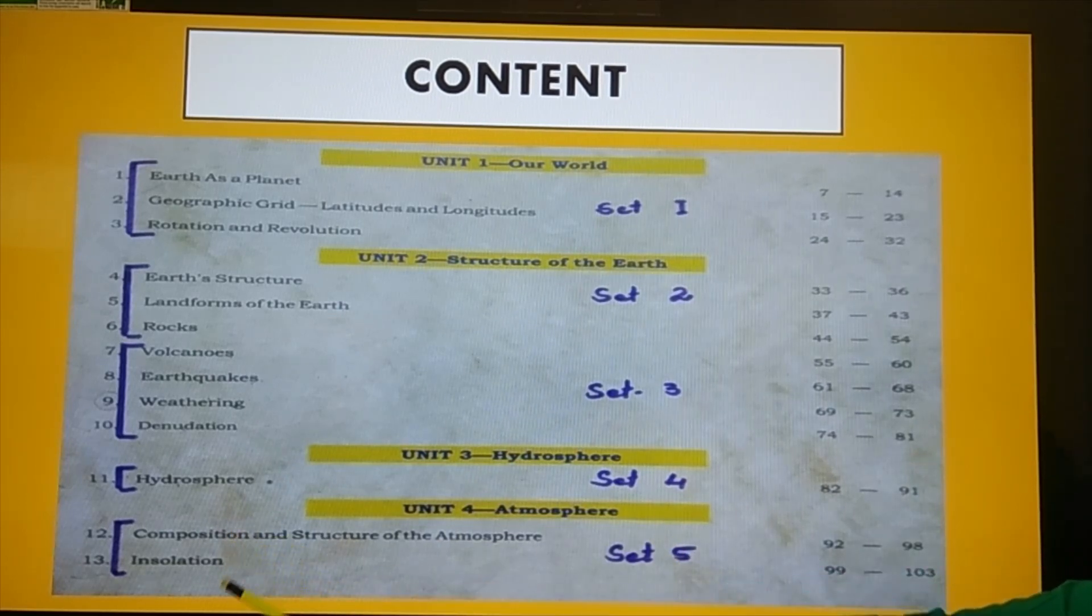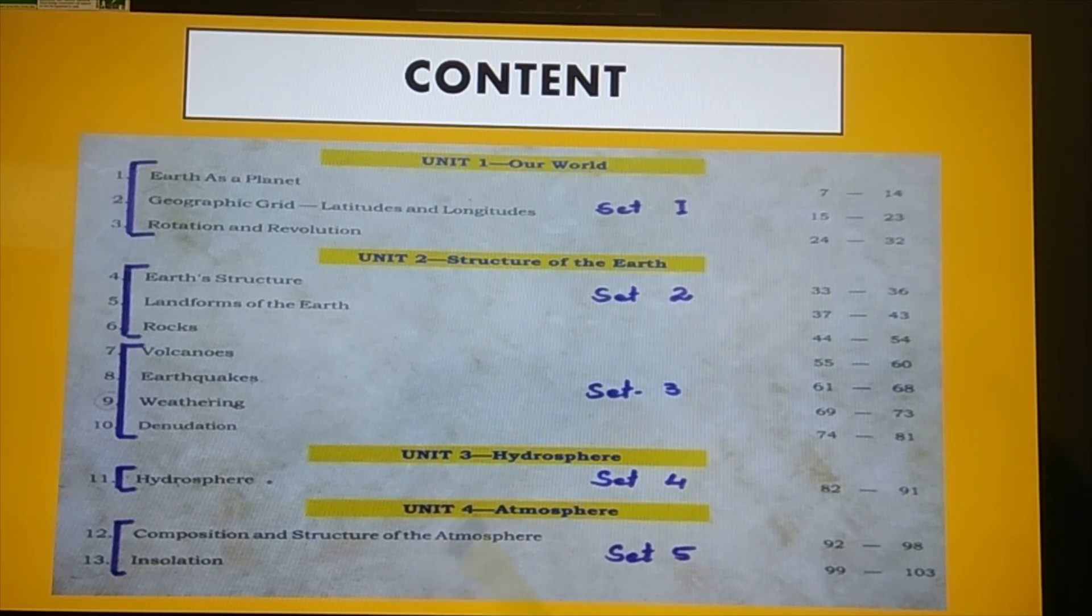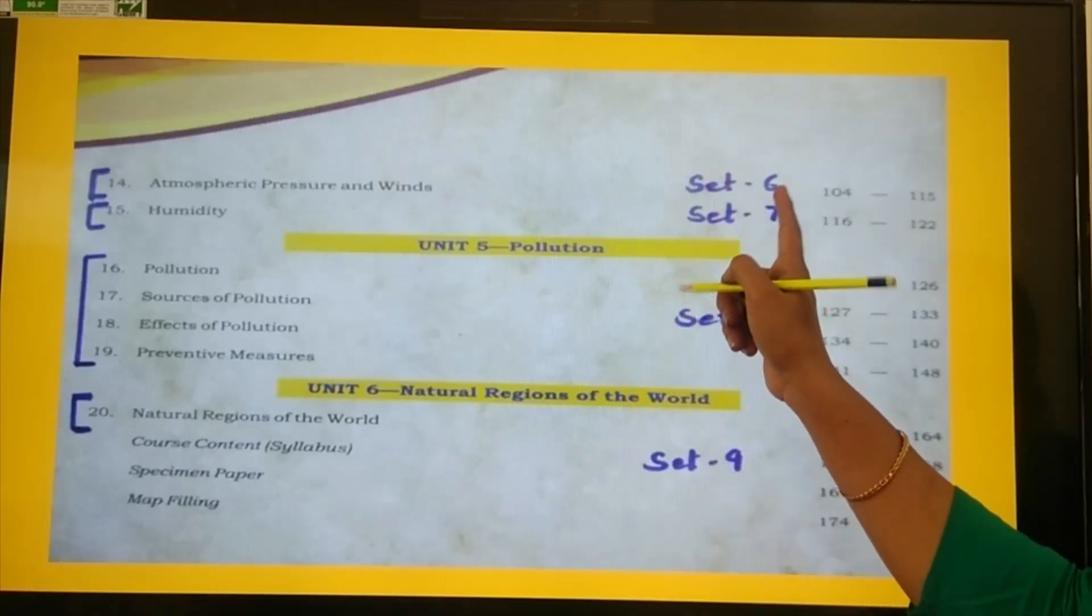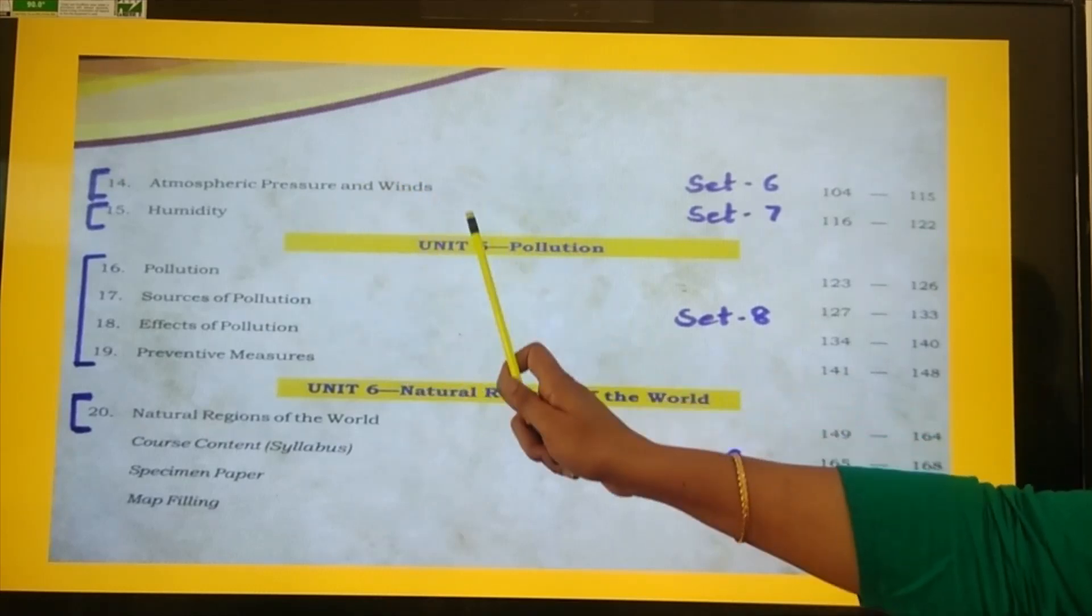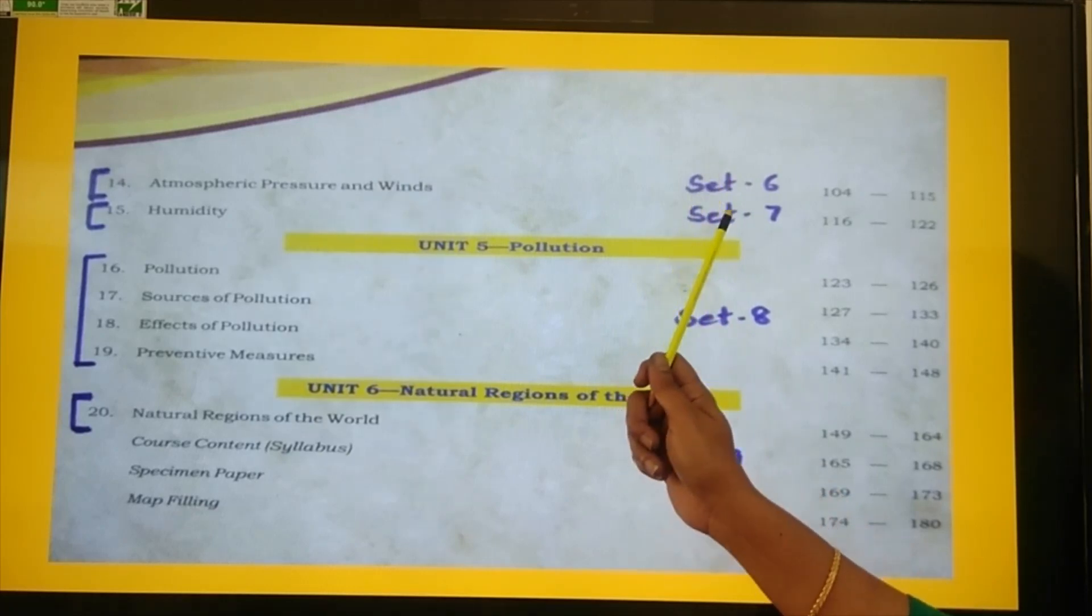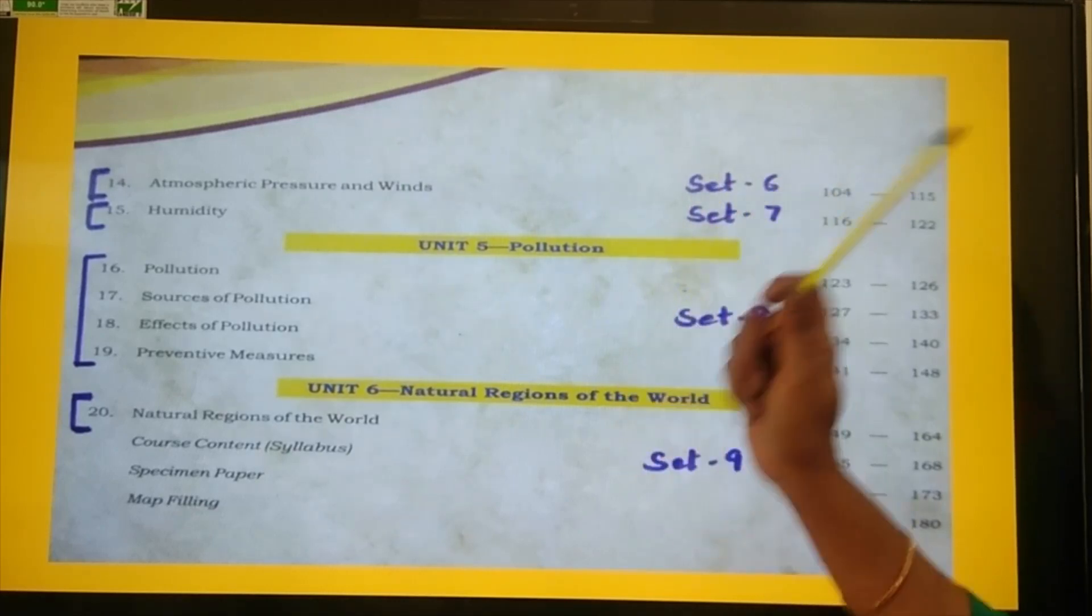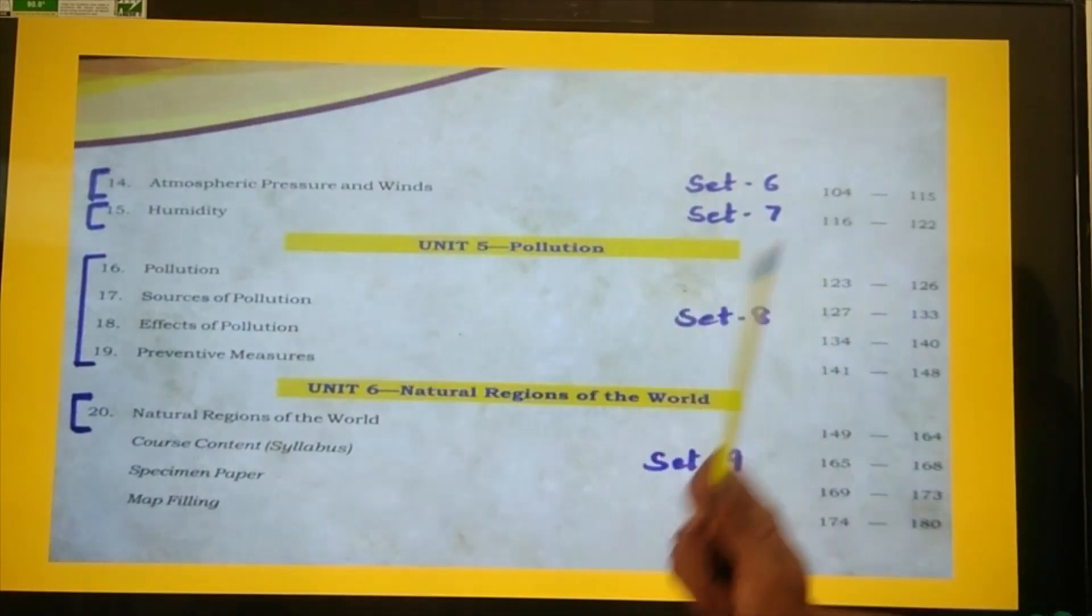Fifth set has 2 chapters: Composition and Structure of the Atmosphere, and Insulation. In set 6 there is only 1 chapter, Atmospheric Pressure and Wind. Set 7 also has a single chapter, Humidity. So single chapter, one question.